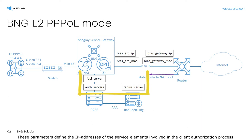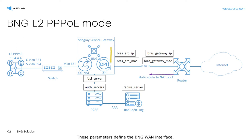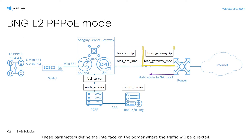These parameters define the IP addresses of the service elements involved in the client authorization process. These parameters define the BNG1 interface. These parameters define the interface on the border where the traffic will be directed.